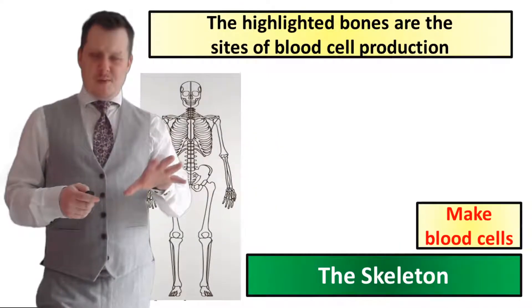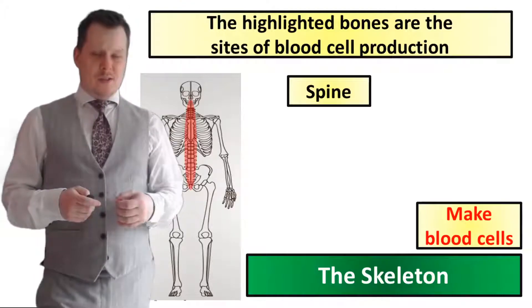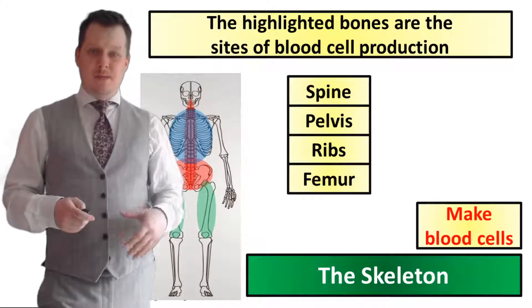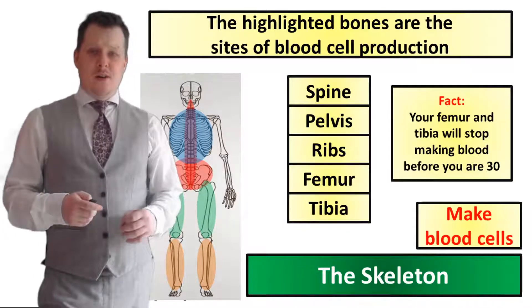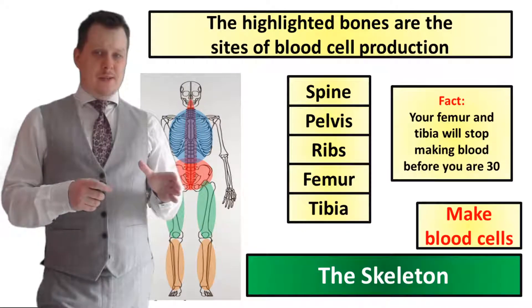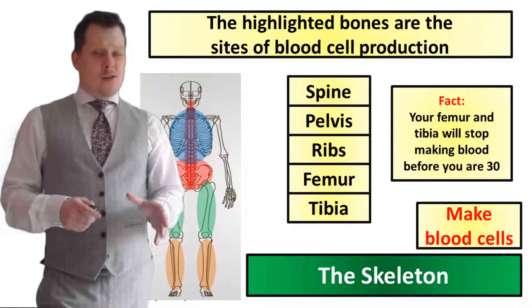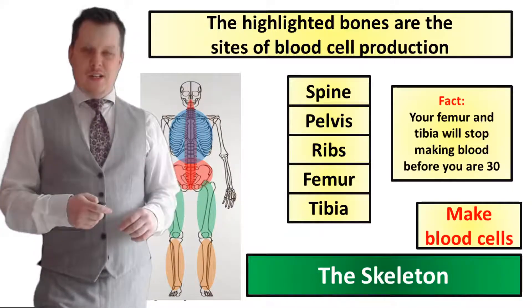And they also, at least some of them, make new blood cells. So the spine, the pelvis, the ribs, the femur and the tibia all make new blood cells. The femur and the tibia however stop making blood cells later on in life.